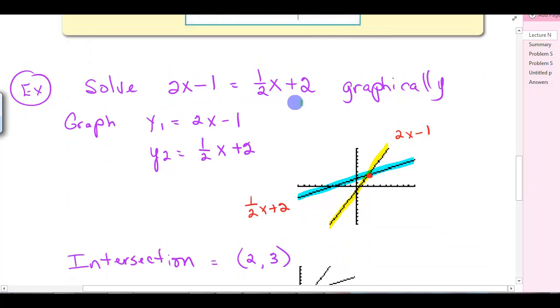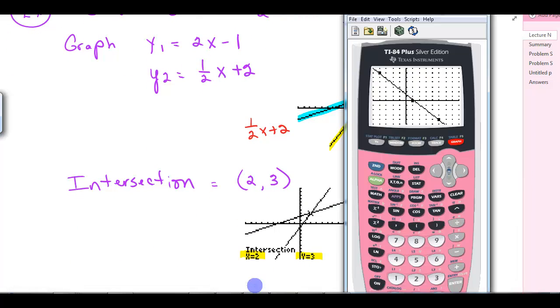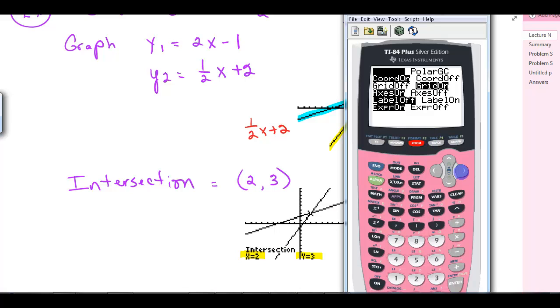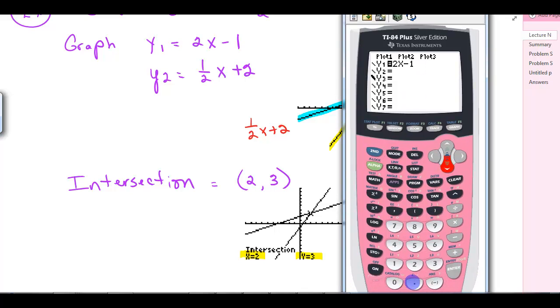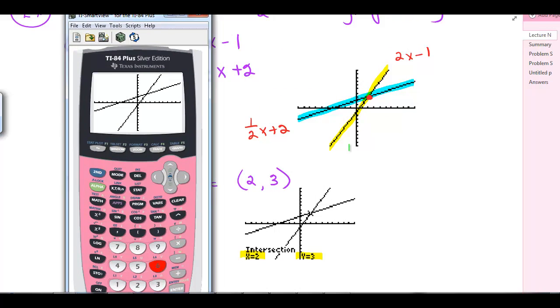Solve 2x minus 1 equals 1 half x plus 2 graphically. In your calculator, go to y equals. In y1, we would put 2x minus 1, and in y2, let's use 0.5x plus 2. We'll do a zoom 6, which gives us a nice standard window. You can see that picture. Here's the 2x minus 1, and here's the 1 half x plus 2.